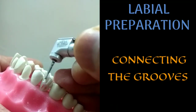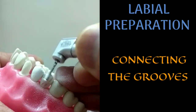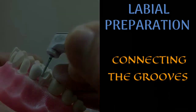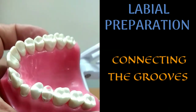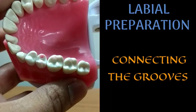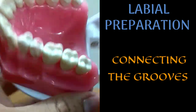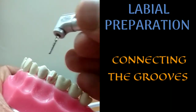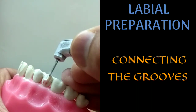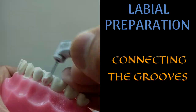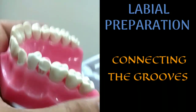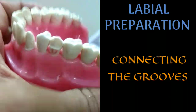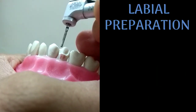I am connecting the grooves — I have finished connecting the central groove with the mesial groove, and now I will connect the distal groove with the central groove as well. After connecting all grooves, I will start making the depth orientation grooves for the gingival half.